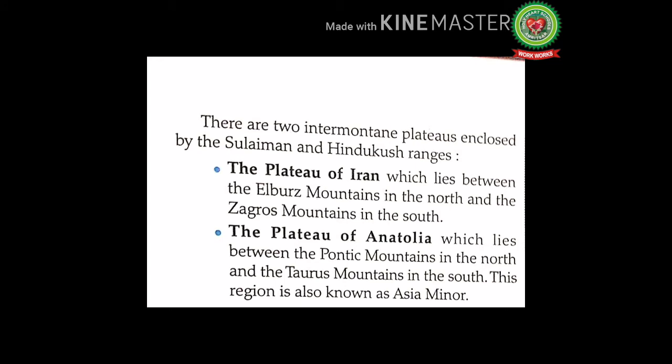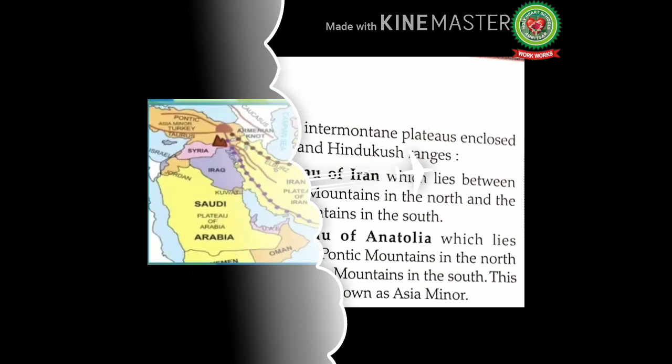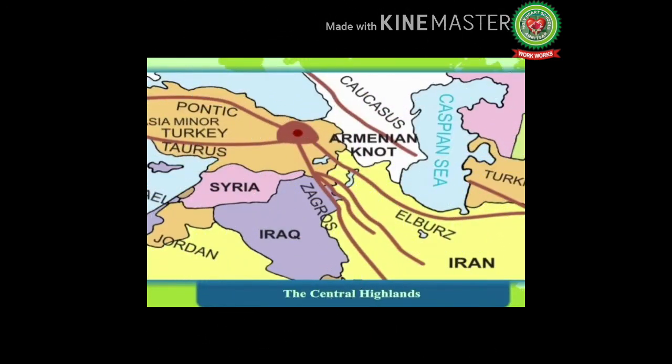There are two inter-mountain plateaus enclosed by the Suleiman and Hindukush ranges. The Plateau of Iran lies between the Alborz mountains in the north and the Zagros mountains in the south. The Plateau of Anatolia lies between the Pontic mountains in the north and the Taurus mountains in the south — this region is also known as Asia Minor. Plateaus surrounded by mountain ranges are known as inter-mountain plateaus.